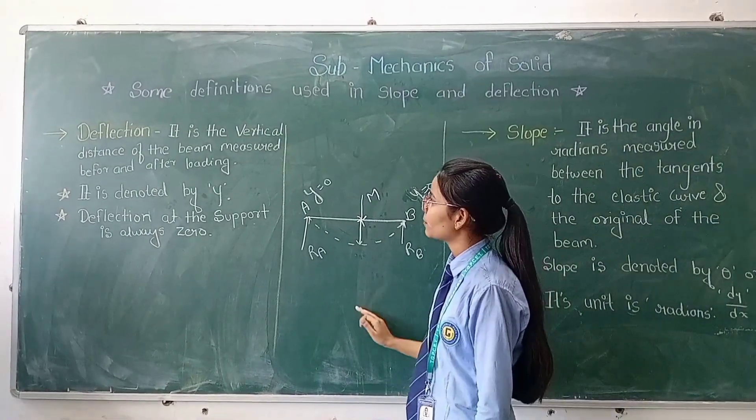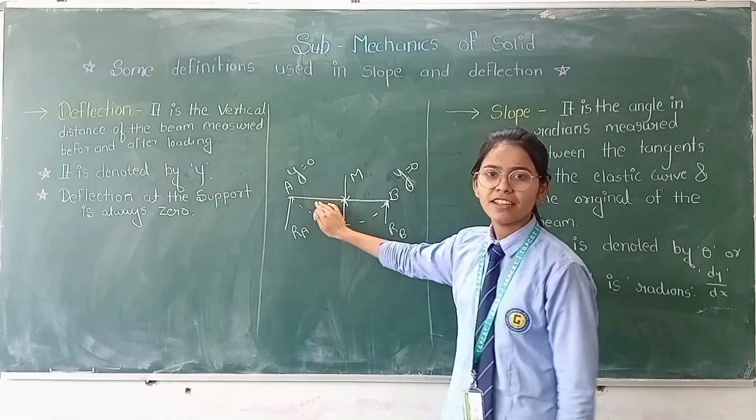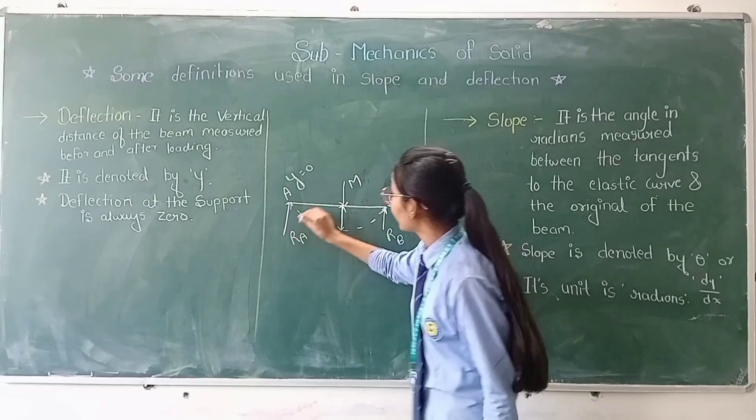So it is all about the deflection. Then, slope is the angle turned by the beam. This is angle theta.